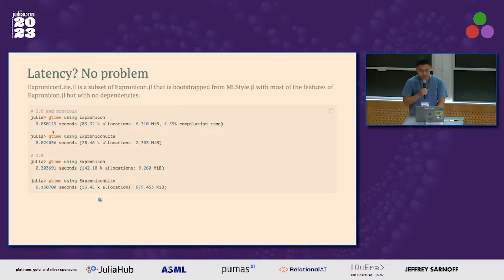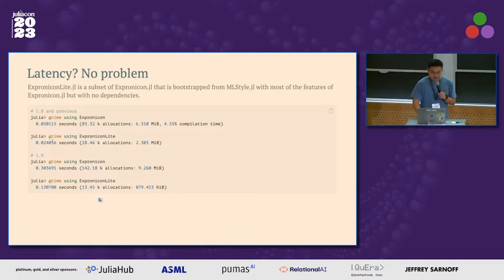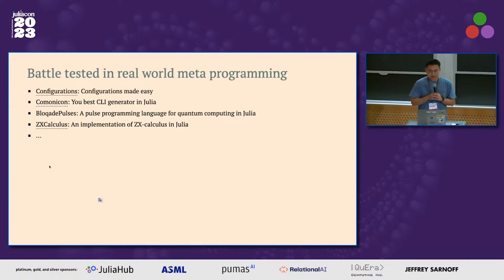So if you run the using in 1.8 and previous version of Julia, you can see X-Proticle line is extremely fast to load. This allowed us to use on some latency sensitive applications like the CLI generators, like configuration parsing. It gets a lot more worse in loading, unfortunately, after 1.9 with the package image.